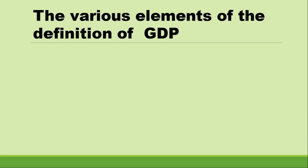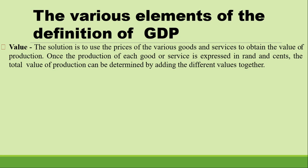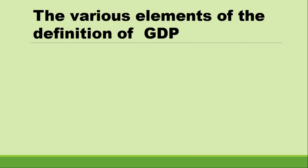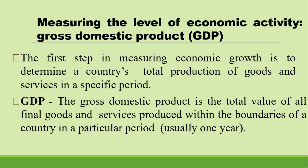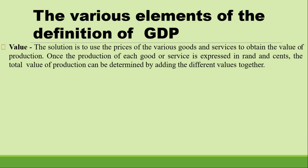Let's look at the elements of the definition of GDP. In the definition we say that GDP is the total value. The solution is to use the prices of the various goods and services to obtain the value of production. Once the production of each good and service is expressed in rand or cents, the total value of production can be determined by adding the different values together. For example, if you are saying that you produce 10 cell phones — what is the value of those cell phones?